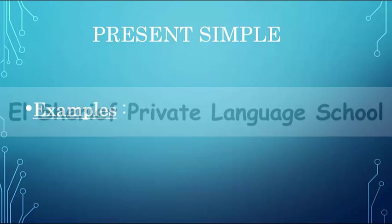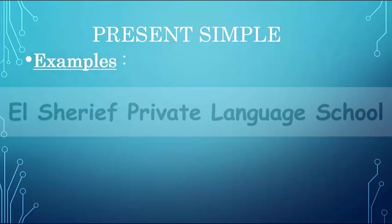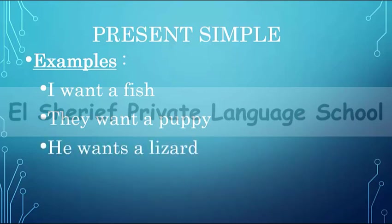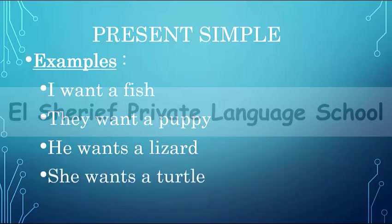Today we have a new verb: 'want.' Look at these examples. The first one: I want a fish. The second: they want a puppy. The third: he wants a lizard. And: she wants a turtle.